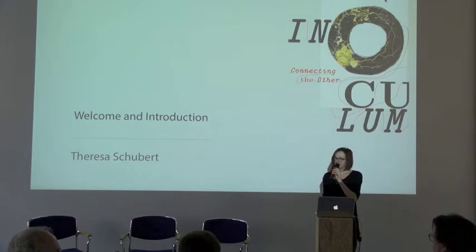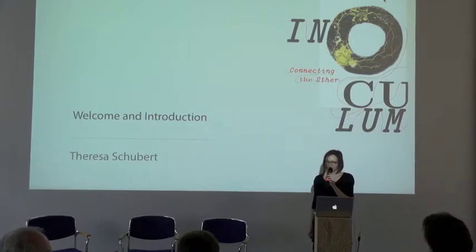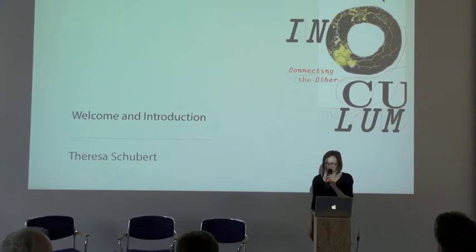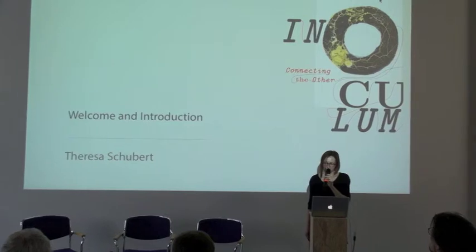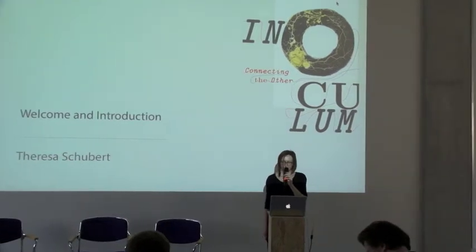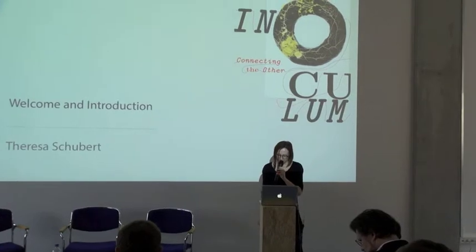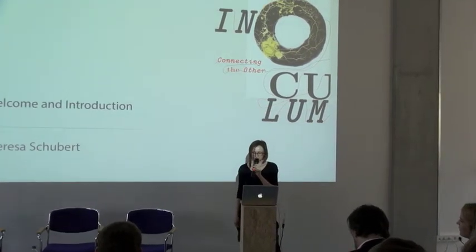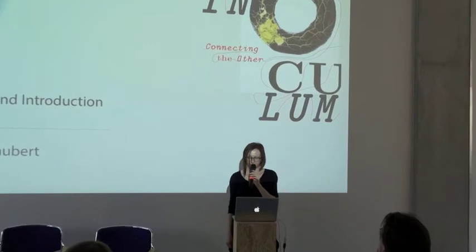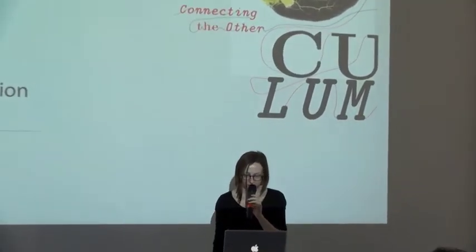Slime molds are a biological curiosity — they are one single cell, yet they can grow huge. Their habitat is the forest, yet they are no fungus or plant. They can move forward, but they are no animal. The mega-cell develops a richly branched network structure, also called the plasmodium, to explore the environment for food.